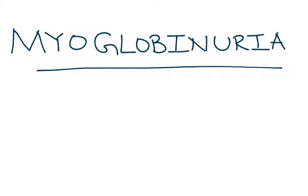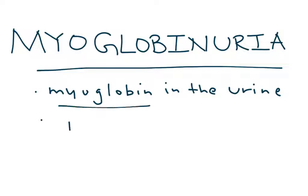Myoglobinuria. Myoglobinuria is myoglobin in the urine, of course. And myoglobin, which I will abbreviate MB, is a protein that is found in muscle tissue.